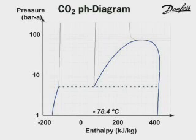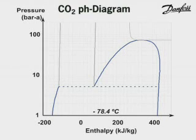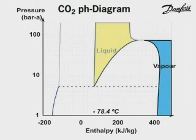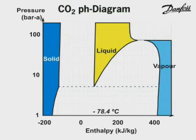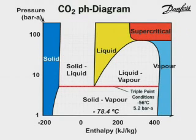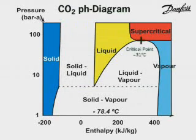For refrigeration purposes, the pressure-enthalpy diagram is commonly used. For CO2 applications, this diagram has to be extended so that the solid and supercritical phases are included. The coloured areas indicate the different phases of CO2, namely vapour, liquid, solid and supercritical. The triple point is here. The critical point is here.